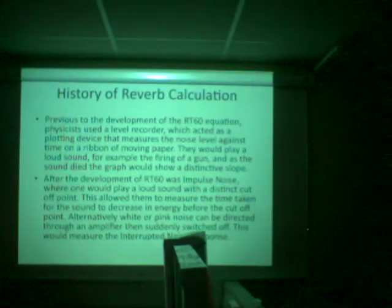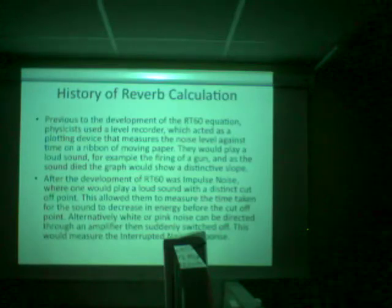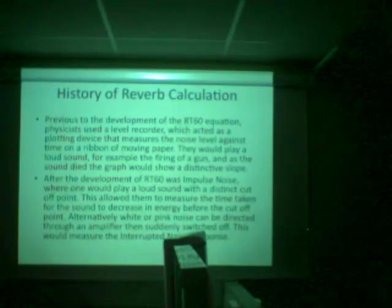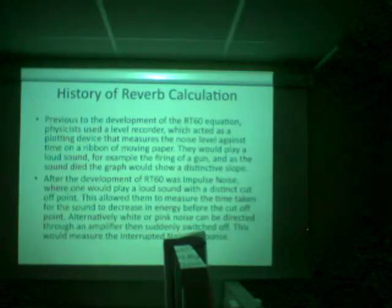After the development of RT60 was impulse noise, where one would play a loud sound to a distinct cutoff point. This allowed them to measure the time taken for the sound to decrease in energy before the cutoff point. Alternatively, white or pink noise can be directed through an amplifier, then suddenly switched off, and this would measure the interrupted noise response.